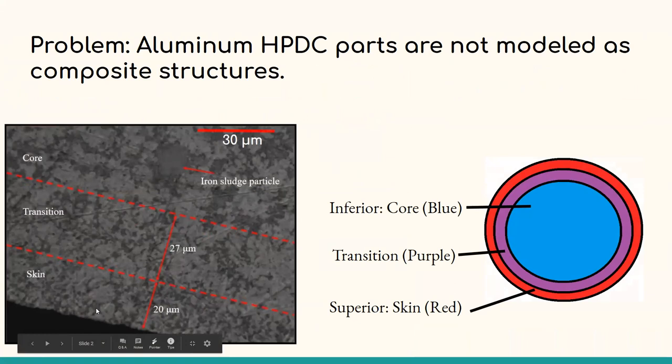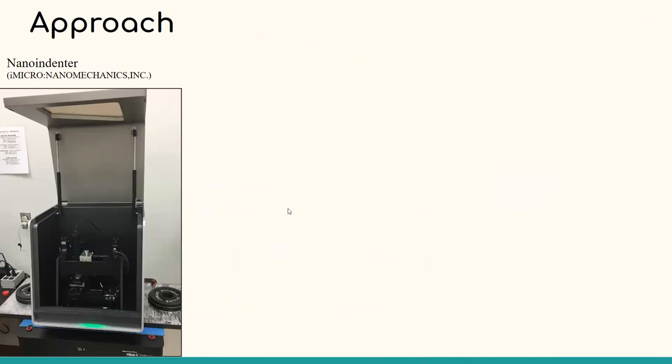Due to rapid solidification, the skin layer has a fine microstructure and is believed to have superior mechanical properties. The core region has an inhomogeneous microstructure and often contains significant porosity. The updated modeling of the system will improve designs and reduce costs associated with testing and manufacturing of new products. Further characterization of the skin-core effect is necessary for improvement in high-pressure die cast manufacturing.